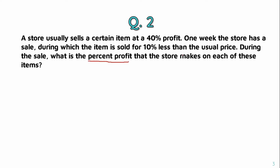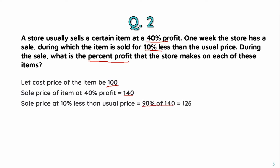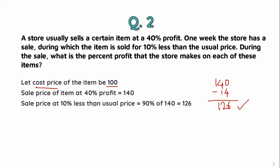During the sale, what is the percent profit that the store makes on each of these items? If the cost price is $100, the usual selling price is $140. The sale price is 10% less, so 90% of $140 is $126. The profit is $26, so the profit percentage is 26 percent.